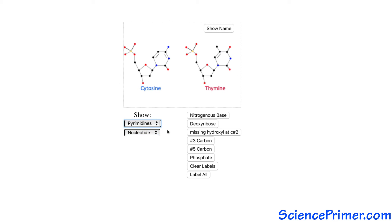There are two groups of bases: pyrimidines—cytosine and thymine—each of which have a six-carbon ring.